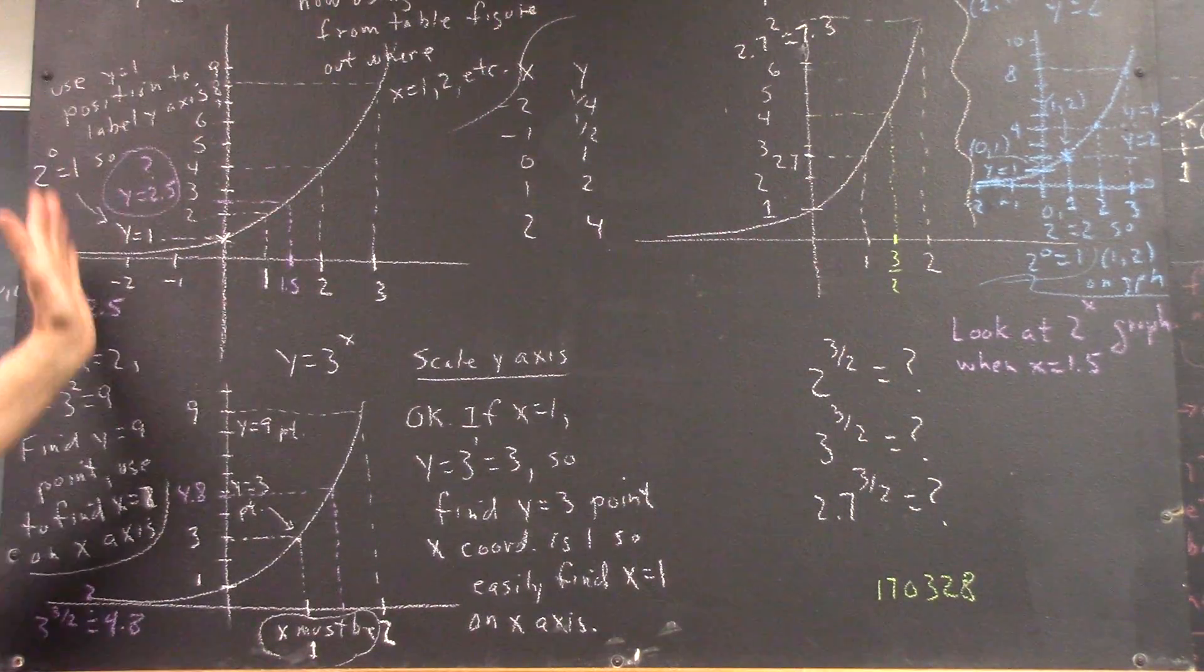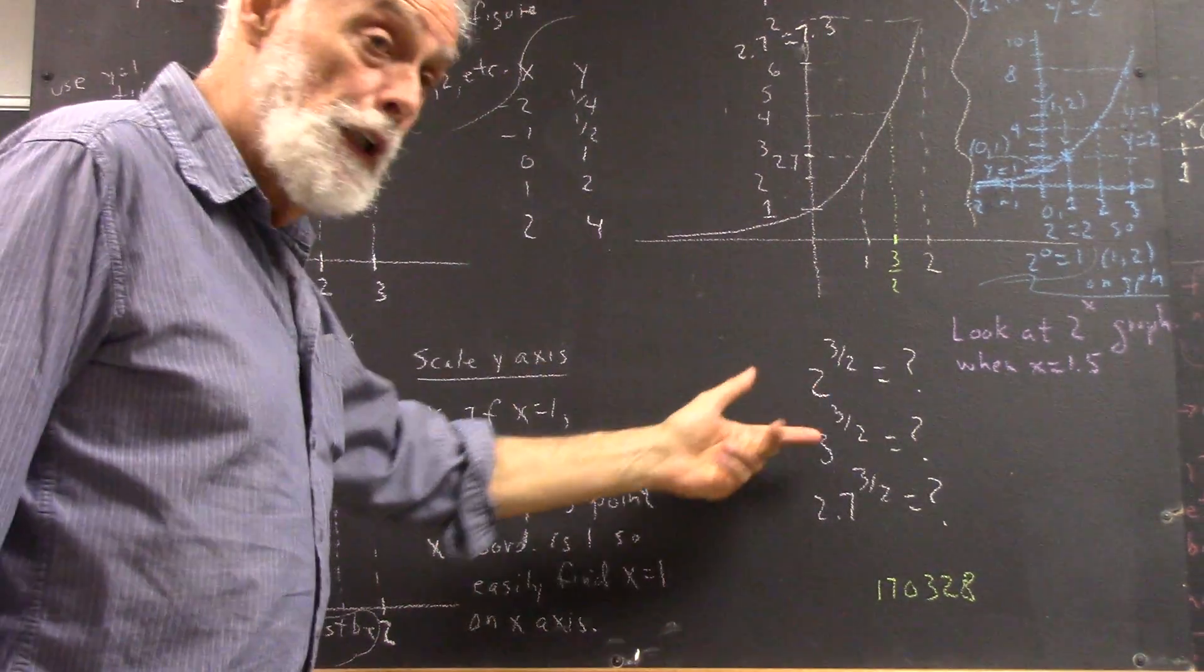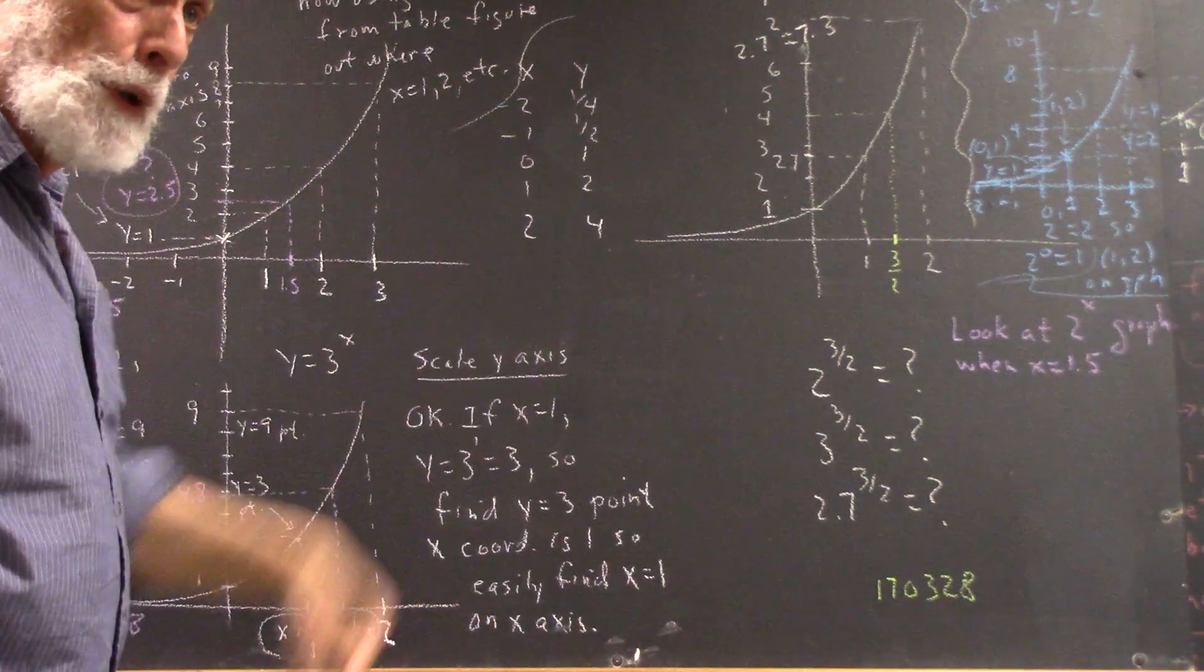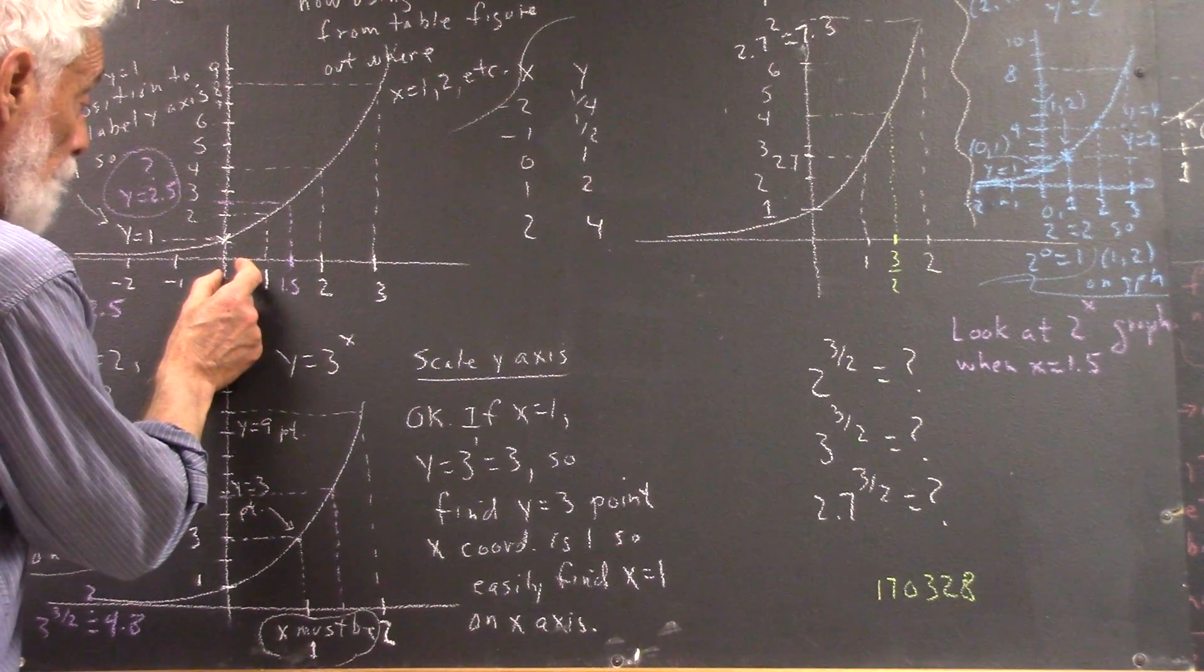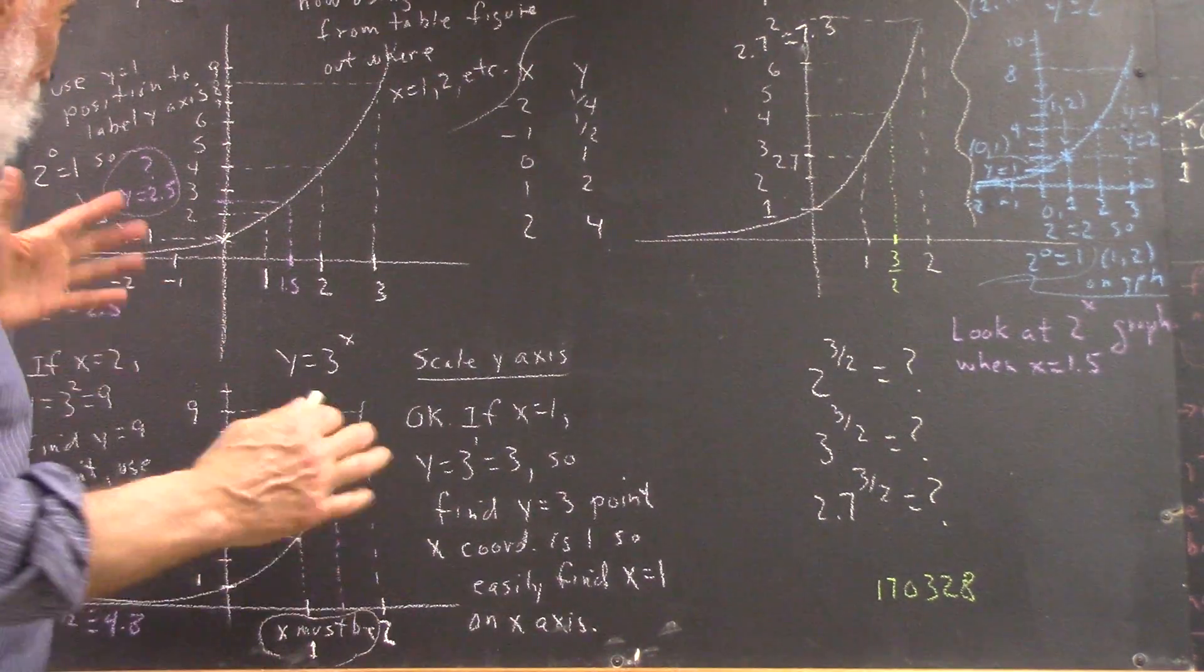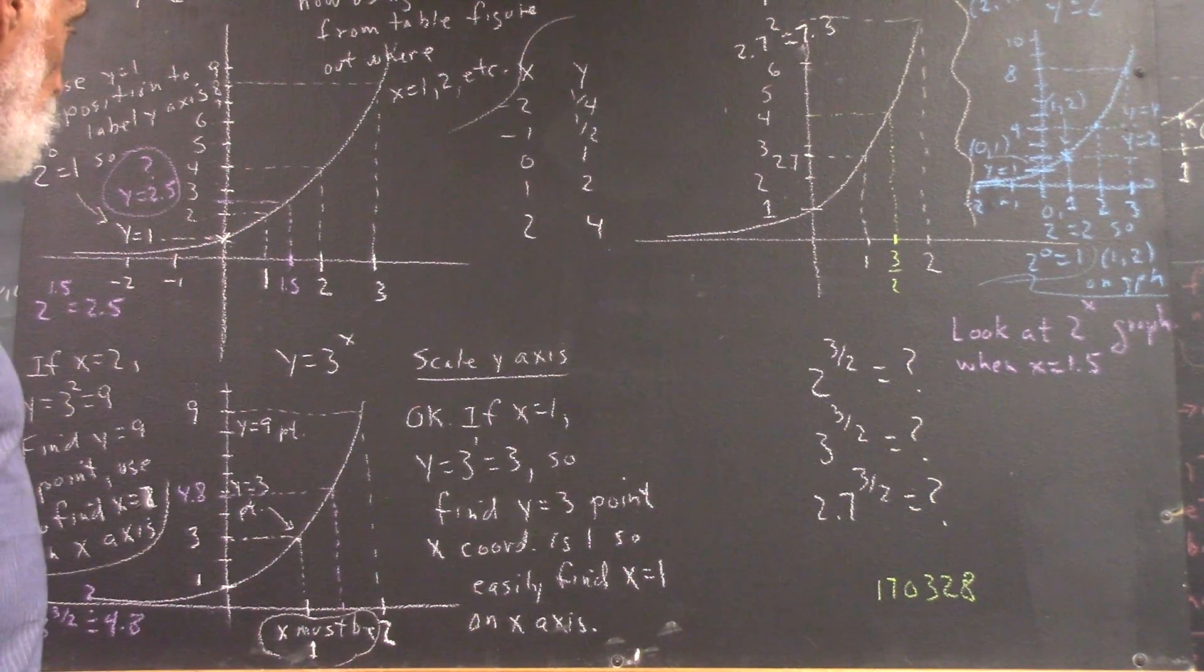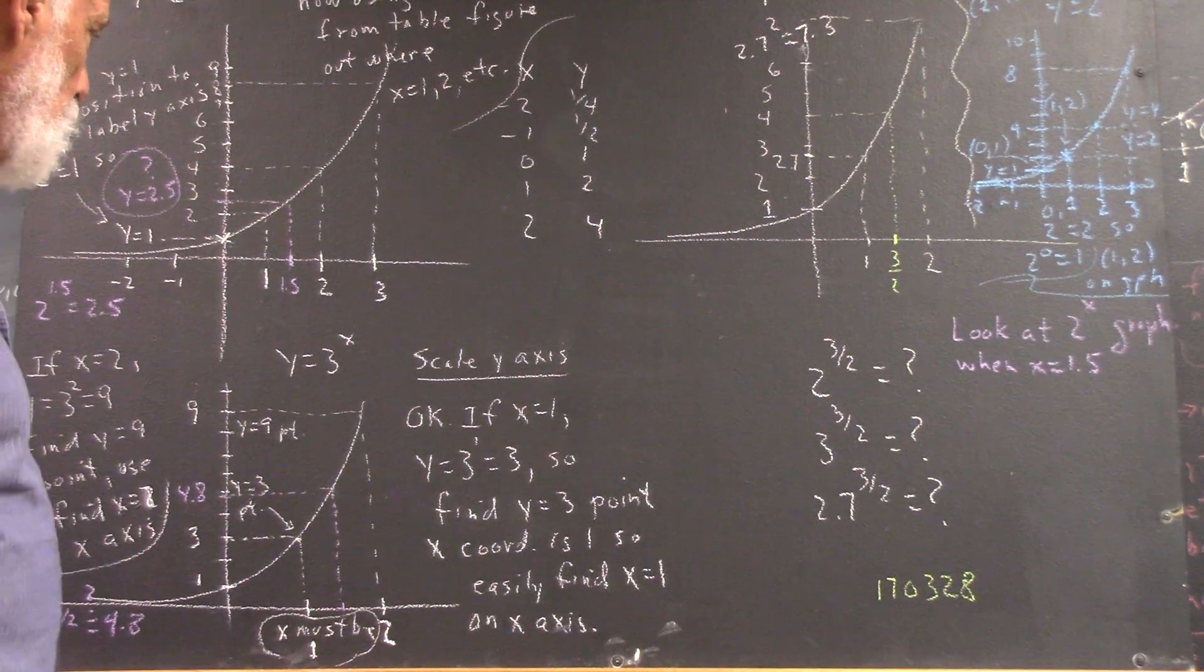Okay, how do we find 2 to the 3 halves? Well, we've got a graph of 2 to the x right here, we've scaled it. So all we have to do is find 3 halves on the x-axis and find out what the y coordinate is. You can convert 3 halves to decimal, it's 1.5, or you can understand fractions and understand that if this is 1, then 1 half is half of this. Another half gets you here, and another half gets you here. You should understand it both ways, but either is okay for right now. So I put 1.5 here. I used the decimal form. I really kind of like the fractional form. And I kind of put it a little too close to 1. It should have been a little over this way, so I'm not going to get a great estimate.